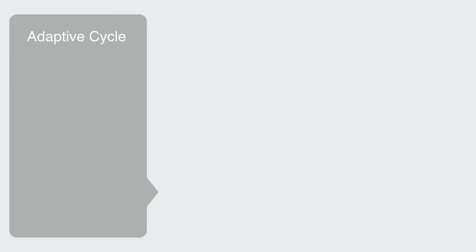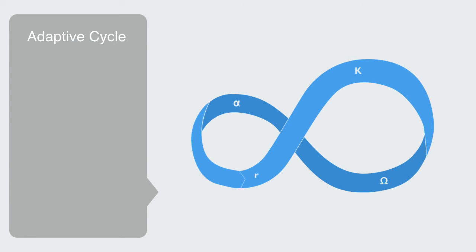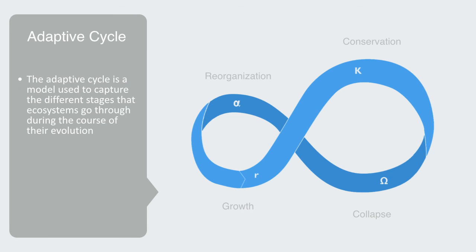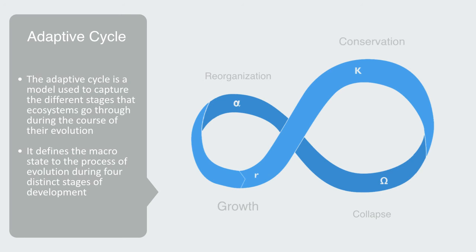The adaptive cycle gives us a visual representation to the stages in the process of evolution. The adaptive cycle is a model used to capture the different stages that ecosystems go through during the course of their development. But this model is equally applicable to all complex adaptive systems, from social organizations to the development of new industries and technologies. It defines the macro state to the process of evolution during four distinct stages of development, including growth, conservation, collapse and reorganization.